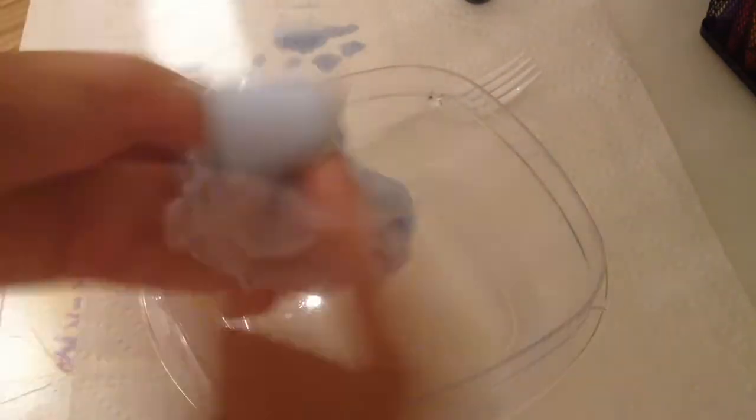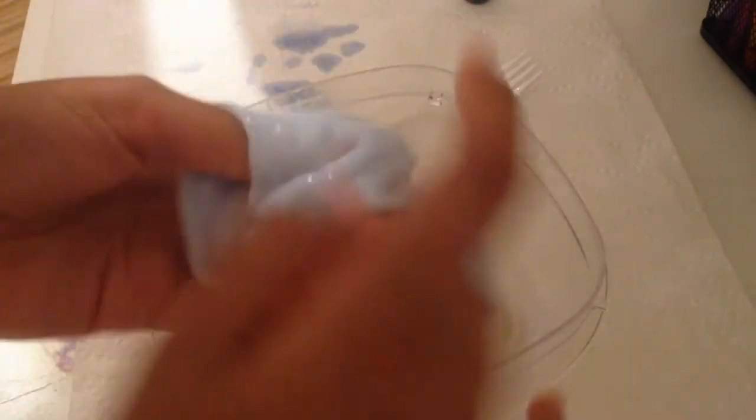So when you follow those steps and then your slime is in one big blob, then you're just going to knead it with your hands and it's going to turn into slime.